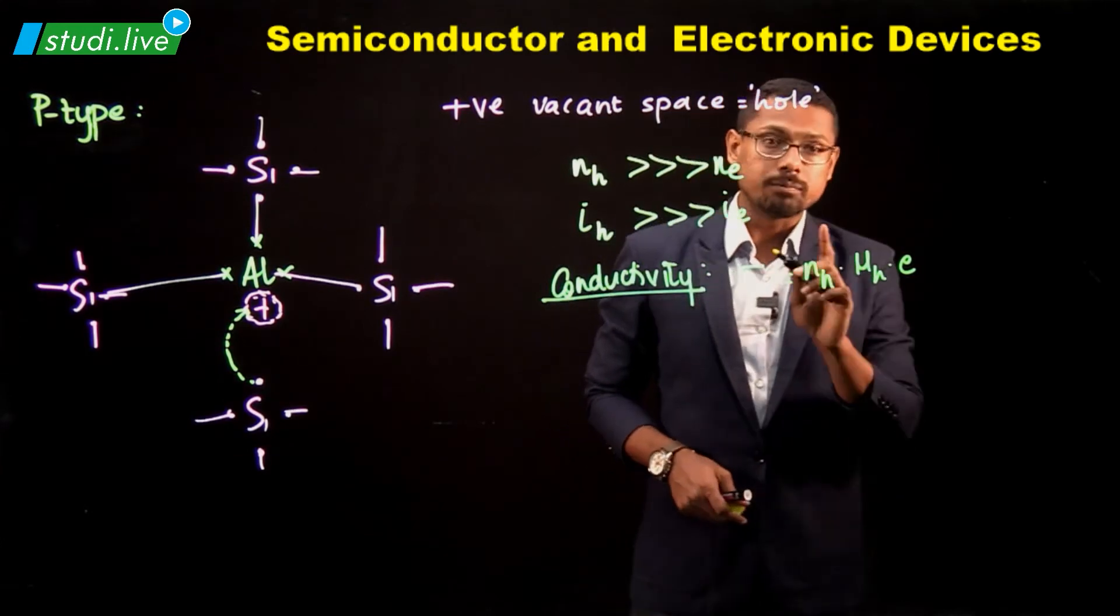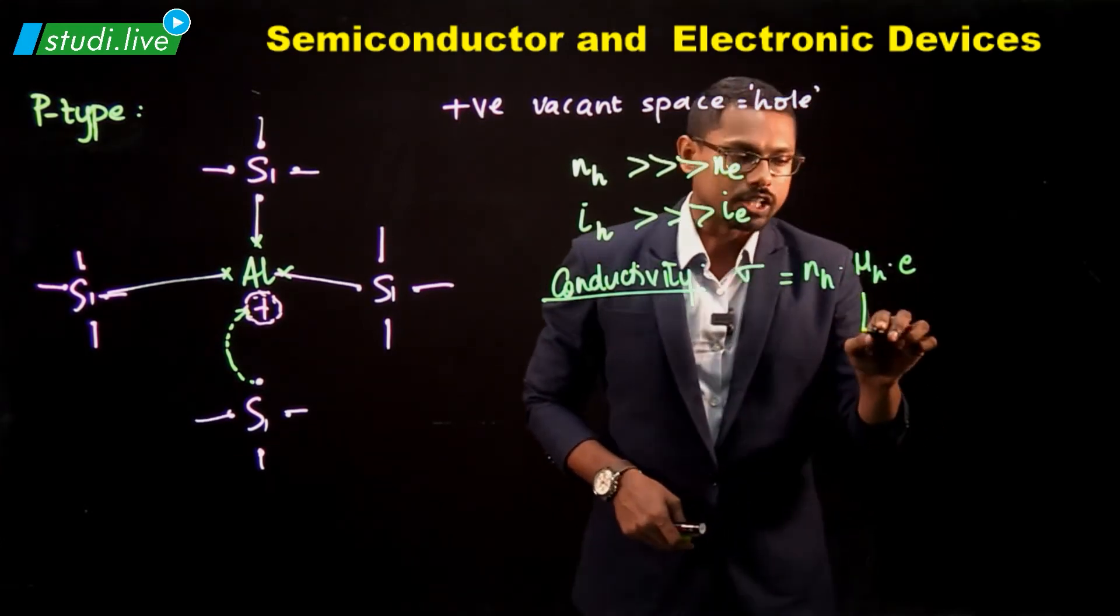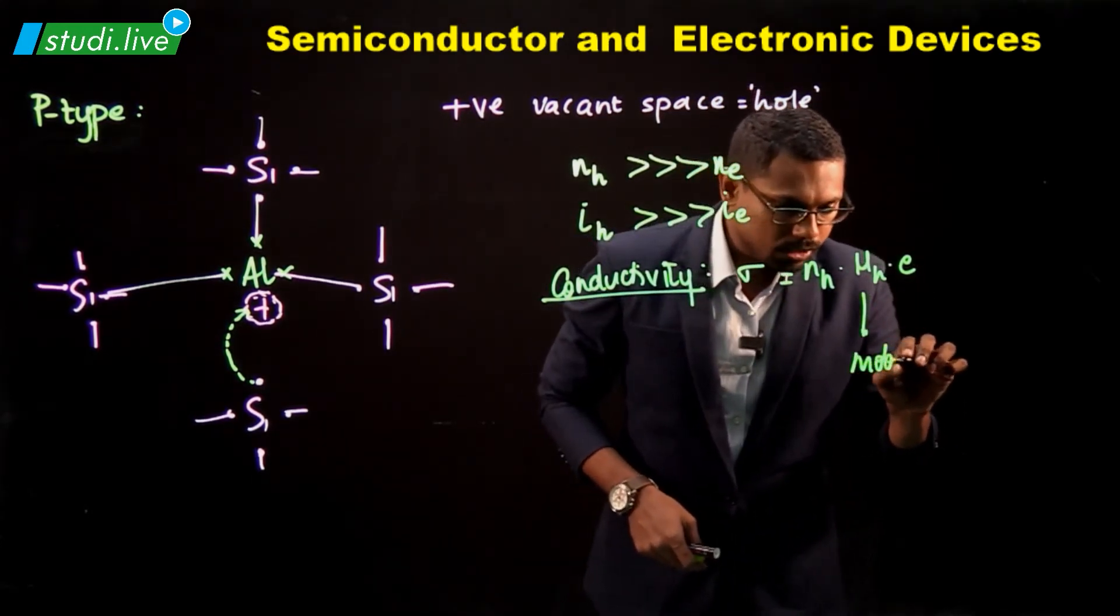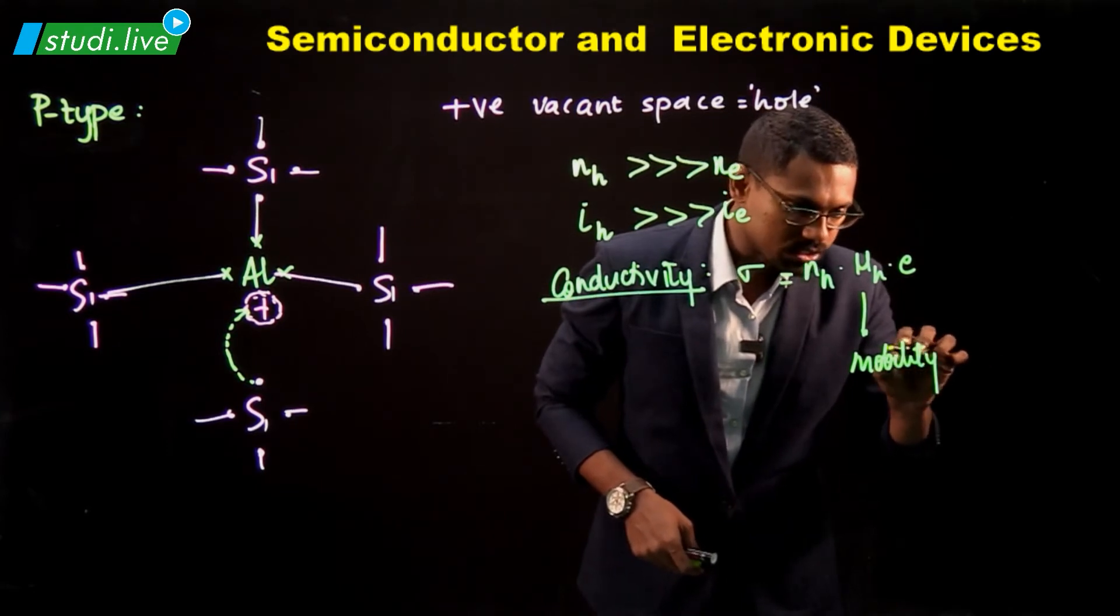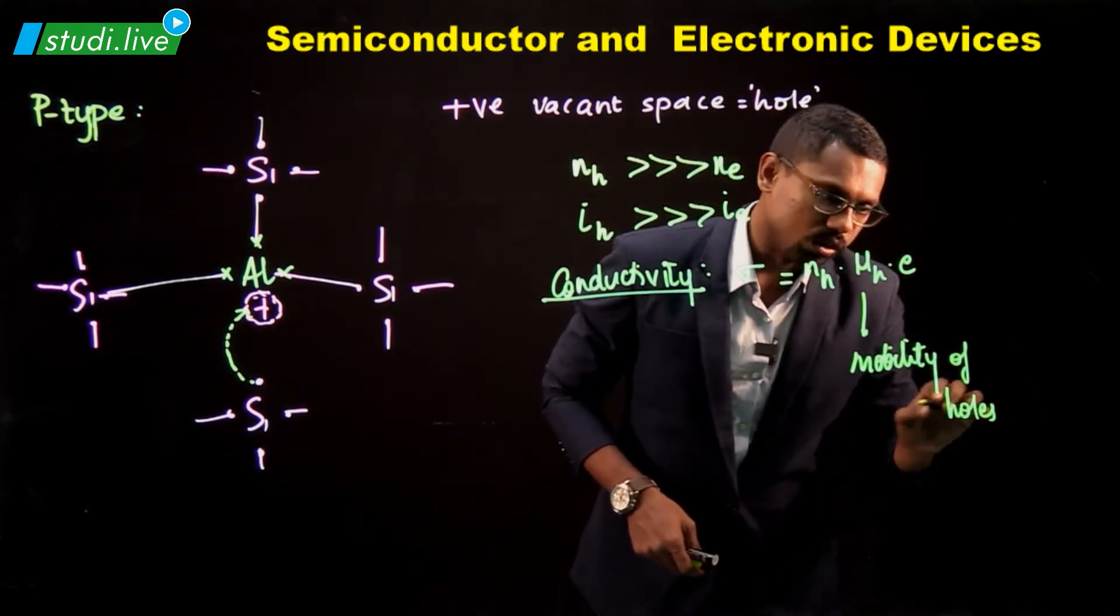What is NH? The number density of holes. What is muH? MuH is nothing but the mobility of holes. What is it? The mobility of holes.